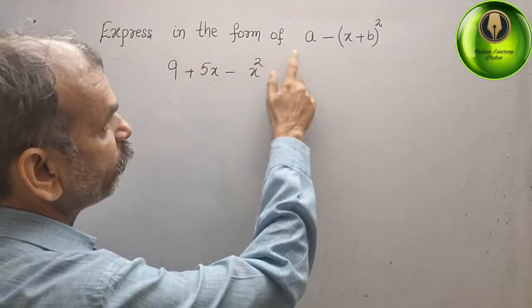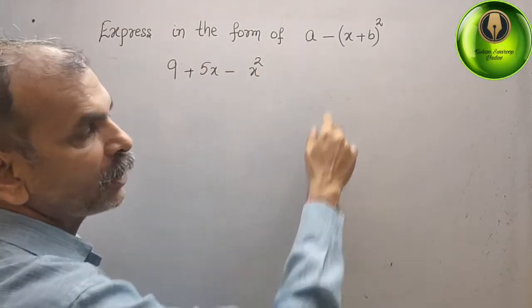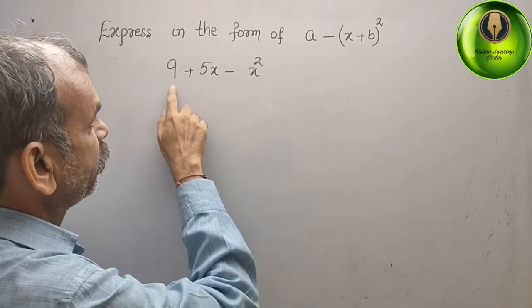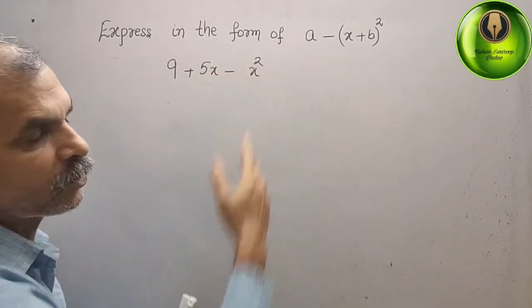Your question is, express in the form of a minus x plus b whole square. They have given you 9 plus 5x minus x square.